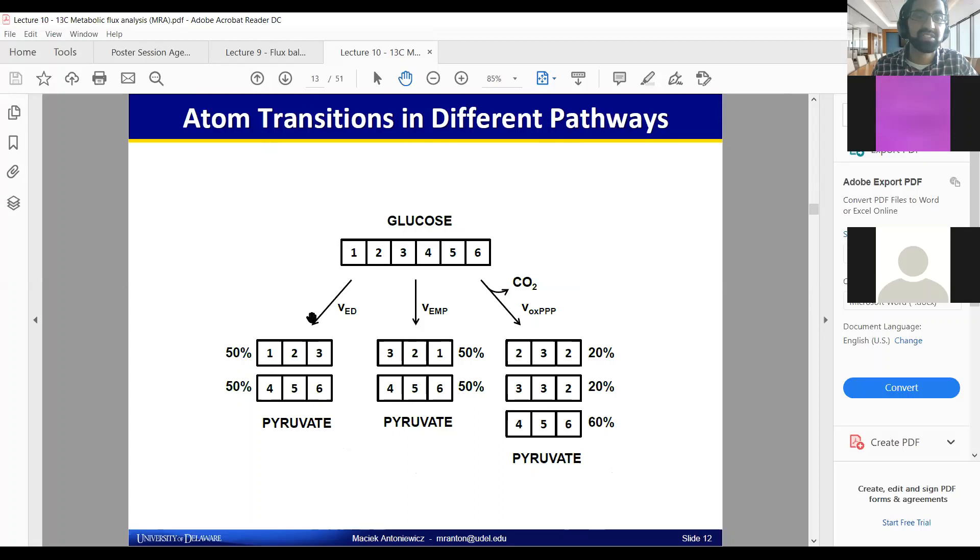This is if the flux went entirely through Entner-Doudoroff. You've got your six carbons of glucose. We haven't assumed that any of them are labeled. We're just saying effectively here that they're all different carbons. If we could distinguish them, we would see an arrangement where you have 1-2-3, 50% of your pyruvates, and 4-5-6. Whereas if it all went through the EMP pathway, you'd have 3-2-1, 4-5-6.